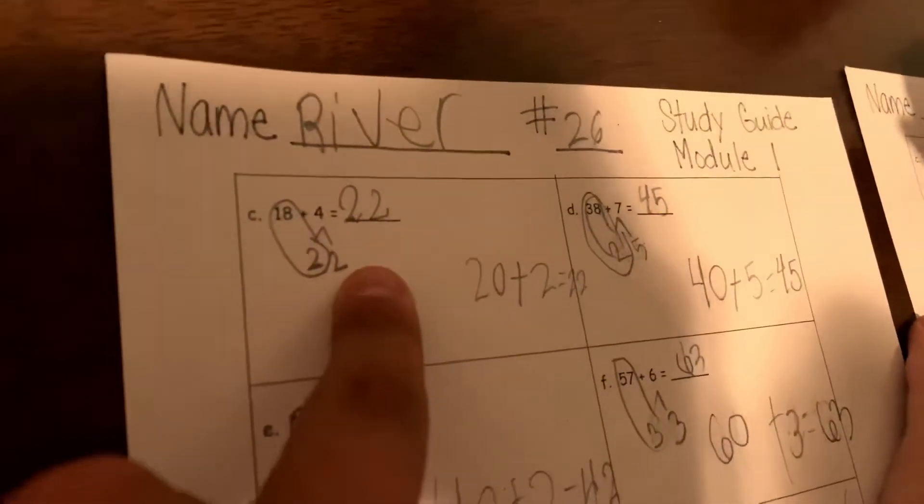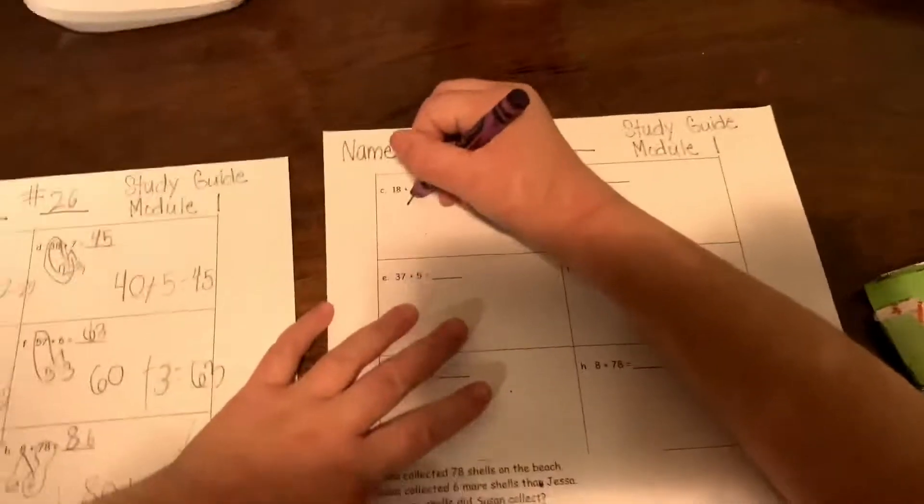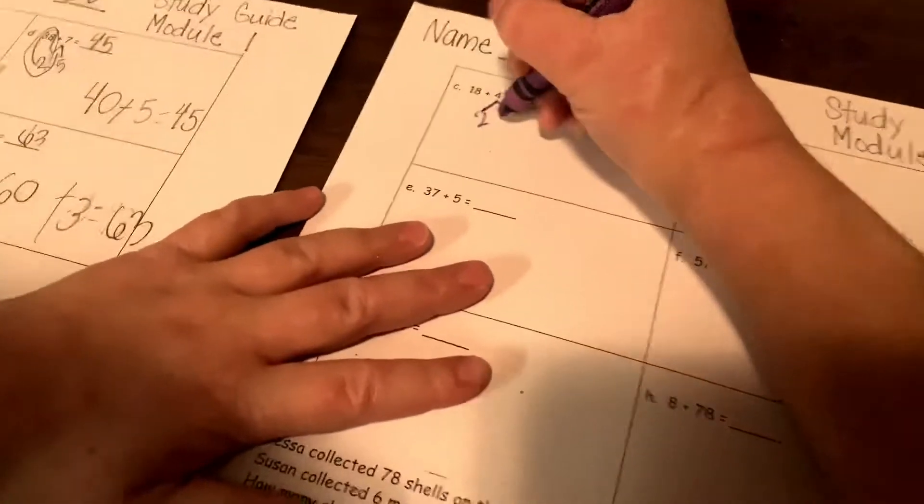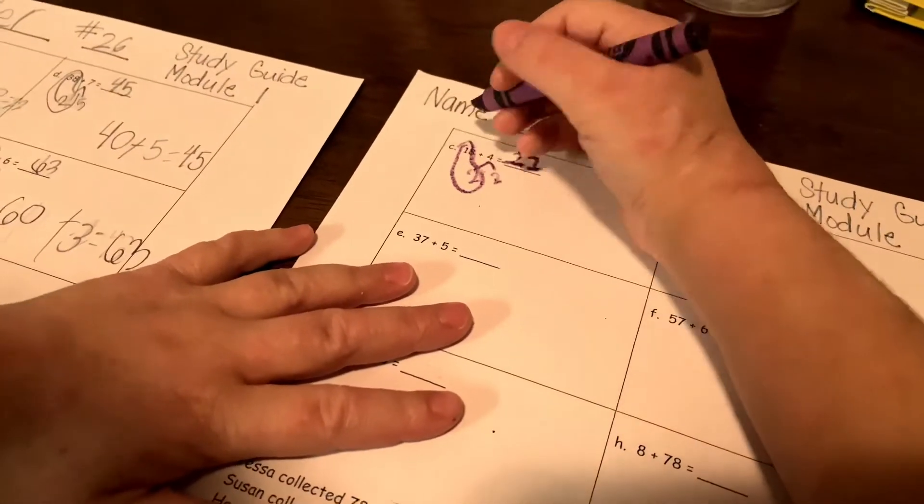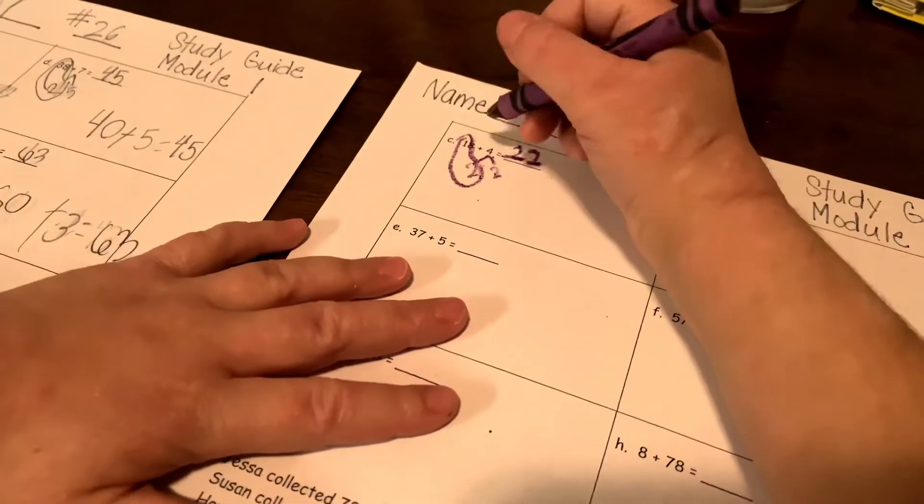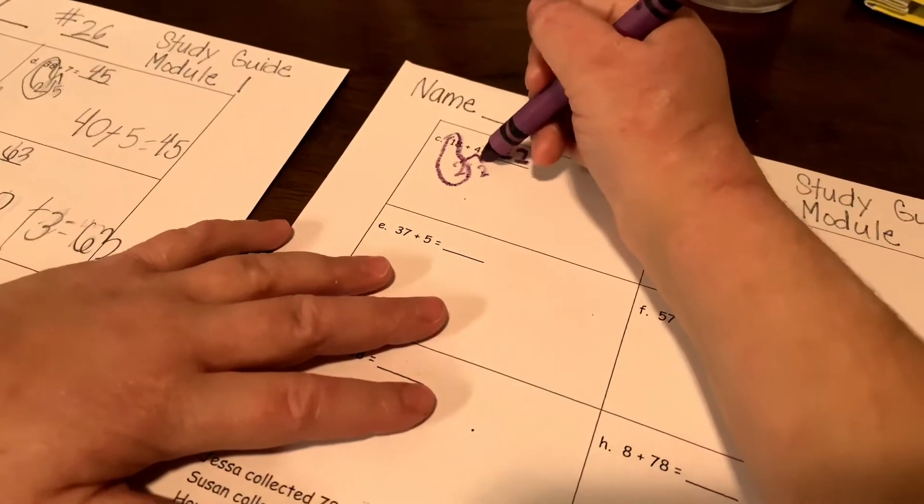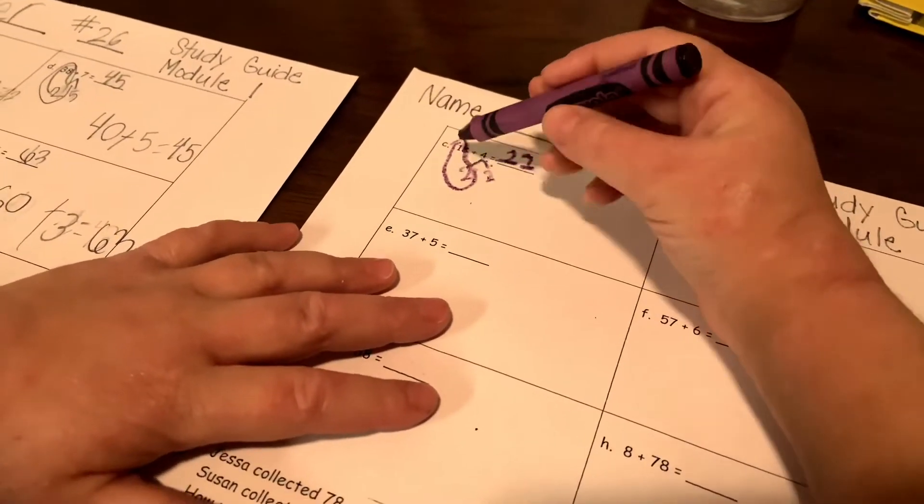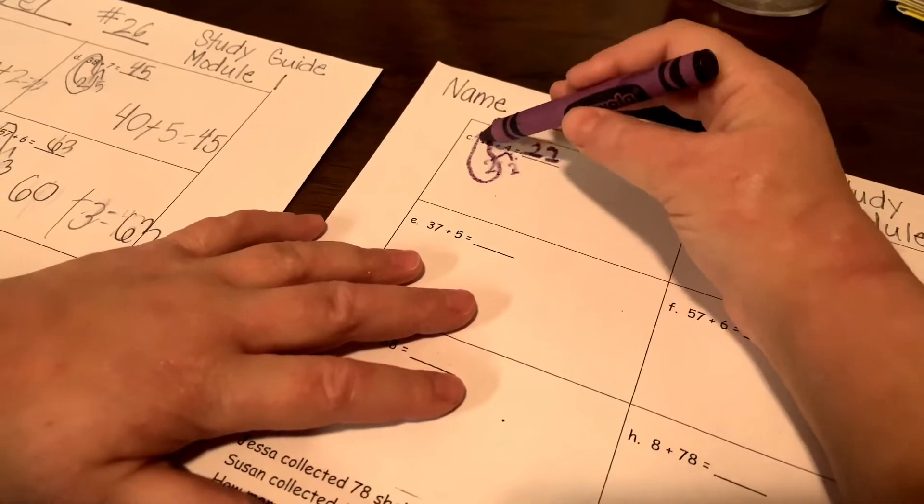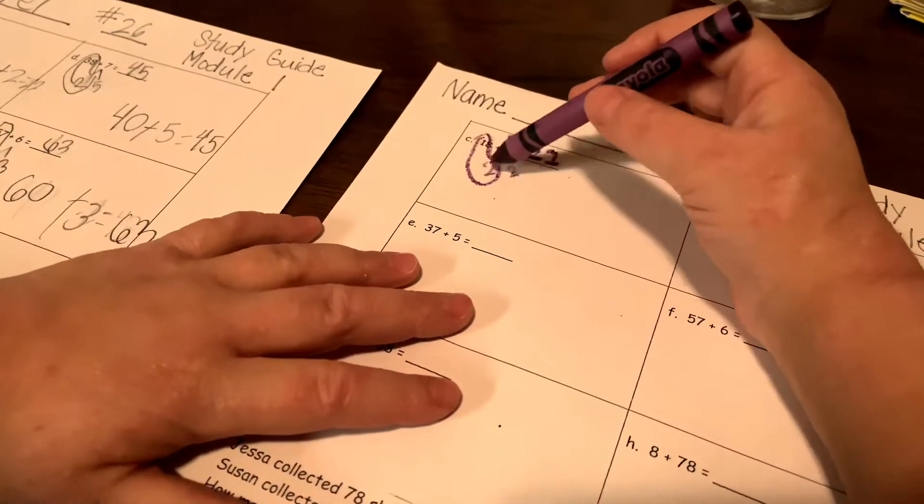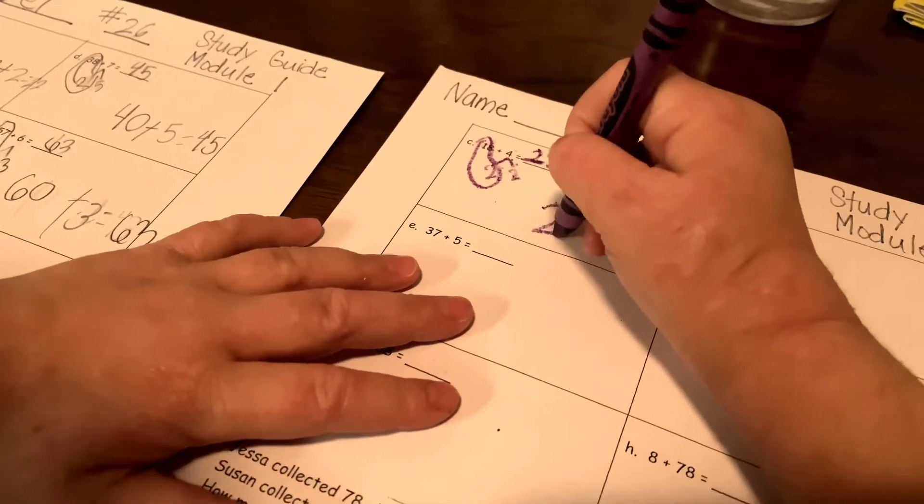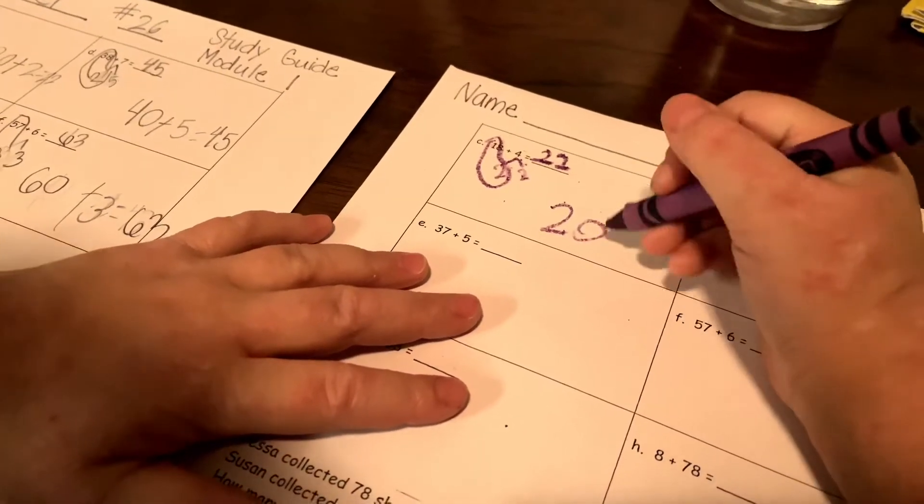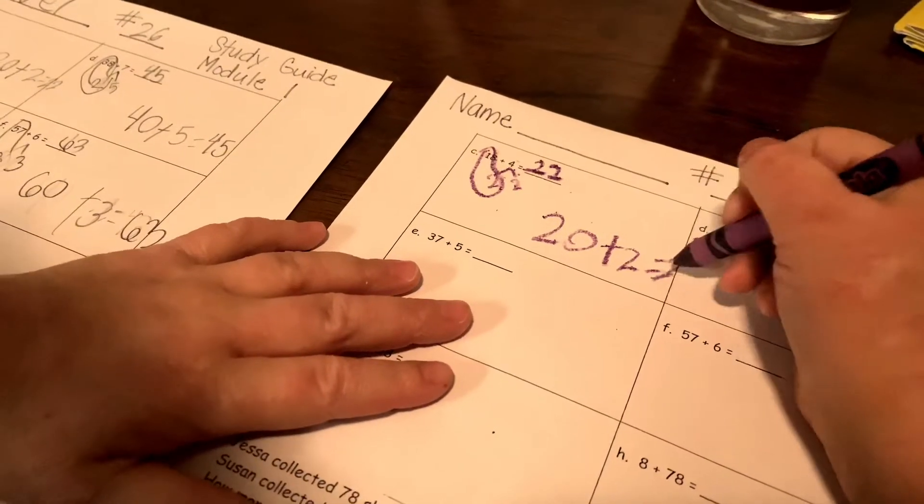And that's how she got that answer. Pretty crazy, right? River, show them how you got it. You gonna talk us through it? Tell us what you're doing. So you break apart the number in the four, and then whatever is left you circle that number. Then you add that extra number, and then you go 20 plus 2 equals 22.